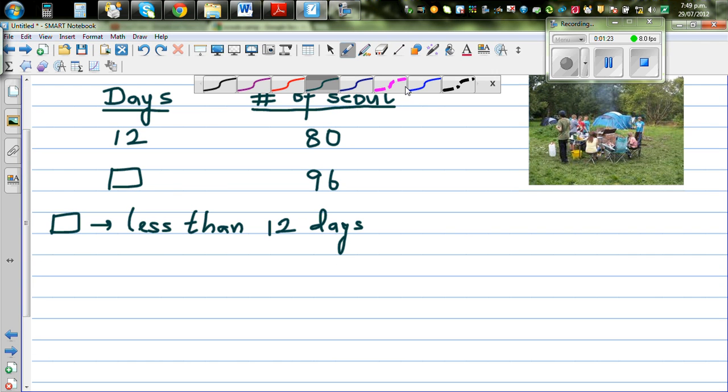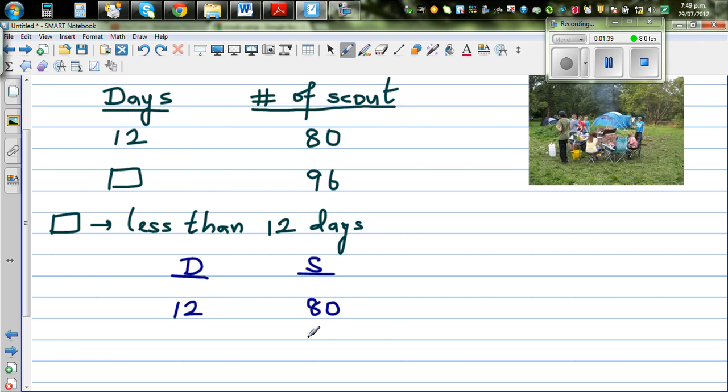I have done this in a previous video, but I would do it again. Let me write days and Scouts. S for Scouts, number of Scouts and D for number of days. So the information that we have is, for 12 days, you have got enough food for 80 Scouts.